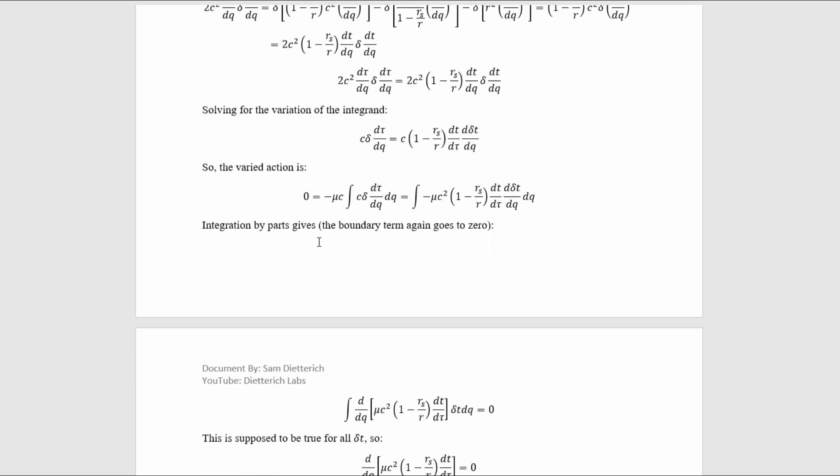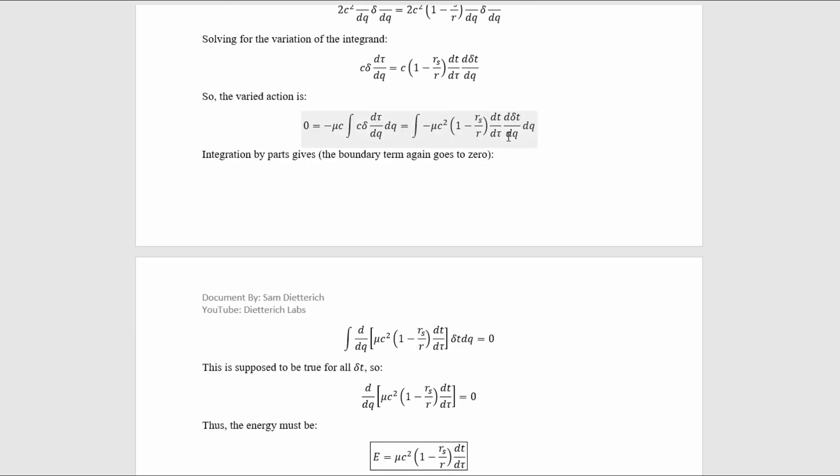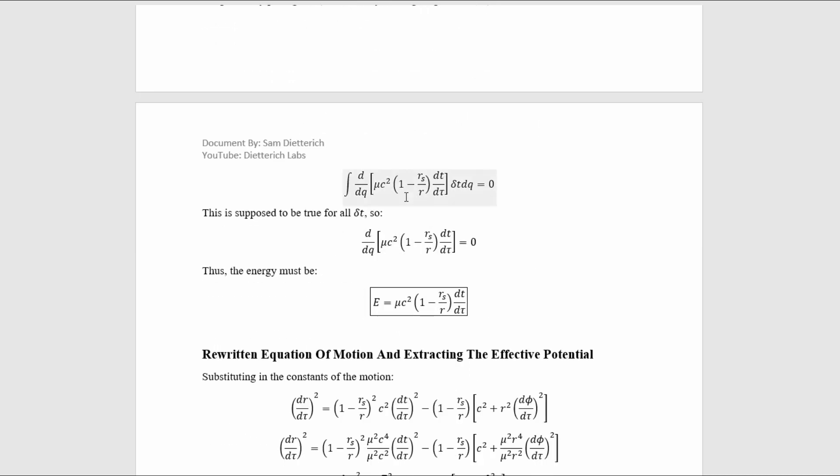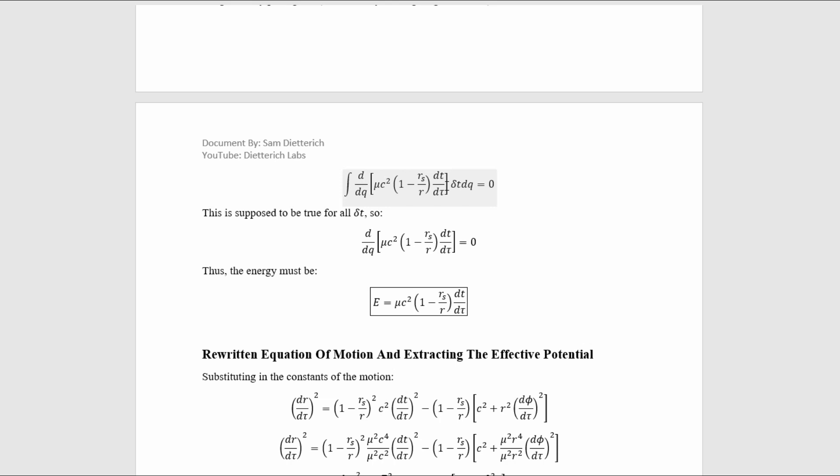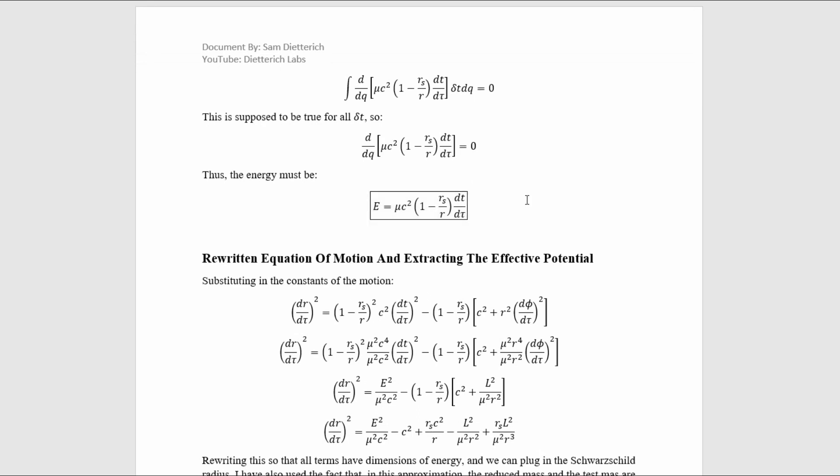So therefore the variation of the action, which must be equal to zero, is just this quantity here. We can then integrate by parts to move this derivative from the delta t over to everything else, which gets us here. Now this should be true for all integration bounds and all delta t, so that implies this equation here, which tells us the energy has to be this.